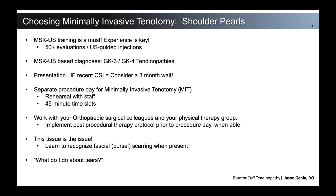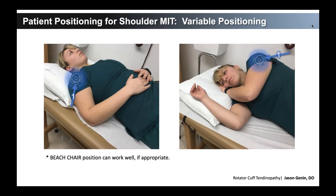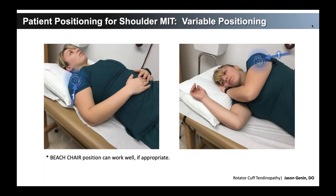We do not recommend putting the probe in the tear itself; rather, work around it. Full thickness tears with retraction are not an indication to do an MIT. When it comes to positioning, there are certainly variable positions to consider. Many like the beach chair position if that works well and you have the right table setup. At the clinic I have a high-low table, and I typically prefer positioning with the patient so I can stand behind them, manipulate the arm in flexion, extension, and internal/external rotation to get the best look. Coming from behind is generally less nerve-wracking for the patient.